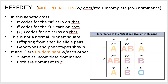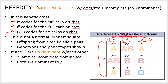Welcome to heredity for multiple alleles with some dominant recessive and incomplete dominance/co-dominance thrown in. First, look at the box on the right side — this is not a Punnett square with parents on each axis. It just shows all possible alleles. Multiple really means more than two, and in ABO blood groups we have three alleles: I-A, I-B, and little i-O.